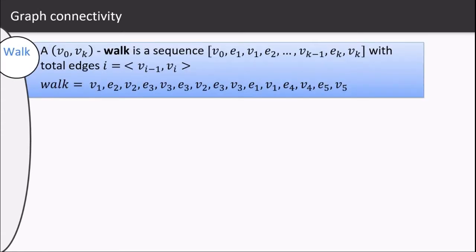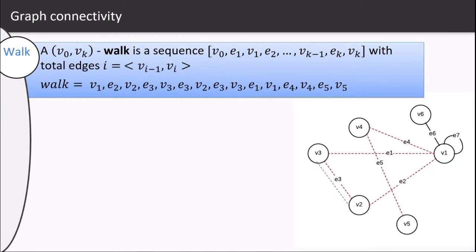To understand graph connectivity, let us get ourselves familiarized with some common terminologies. A walk is a sequence of vertex followed by an edge, and it continues. So a walk in a given graph is starting from v1 going to v2, v3, then back to v2, then going back to v3, then v1, v4, and v5. Note that it's going twice from the edge e3.